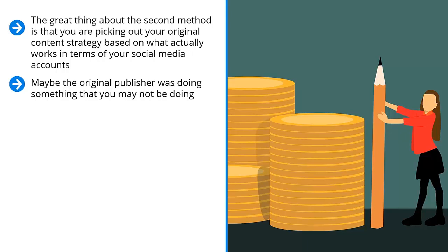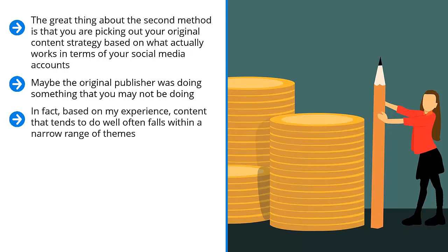Do curation first, let it run, and then pay attention to your statistics. You should be able to see a pattern. Based on my experience, content that tends to do well often falls within a narrow range of themes. In fact, in some of my campaigns, almost all of the content that got a lot of love from the Internet was focused on one question. That's how focused your audience's needs may be.